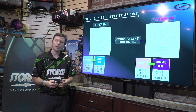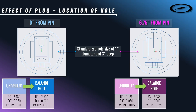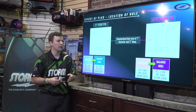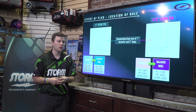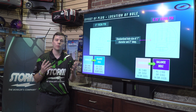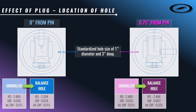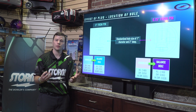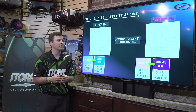With everything we talked about in the previous section, these numbers should make sense. The zero-inch hole shows a significantly higher RG value and a lower differential value. The intermediate is completely unchanged because we're nowhere near the Y or Z axis. On the six and three-quarter ball, the RG remains relatively low, total differential goes up significantly, and intermediate differential goes up as well because we're straight through the PSA. These are consistent with what we showed in the previous slides.